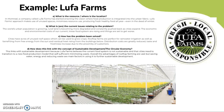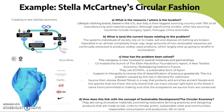Now we're going to look at Stella McCartney's circular fashion. The resource is lifestyle clothing. The brand is based in the US, but Italy is their biggest sourcing country with 76% of all manufacturing and material suppliers. Other key sourcing countries include Hungary, Spain, Portugal, China, and India.